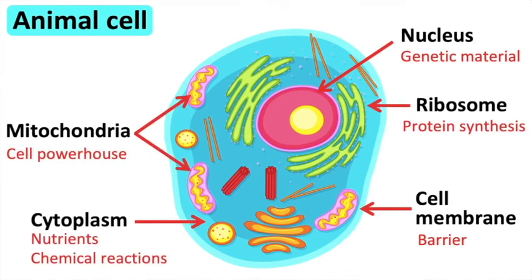The nucleus contains genetic material, which controls the cell's activities. The cell membrane controls the movement of substances that go in and out of the cell. It's able to do this because it has a structure that is permeable to some substances and not others. You can think of it as a gatekeeper.